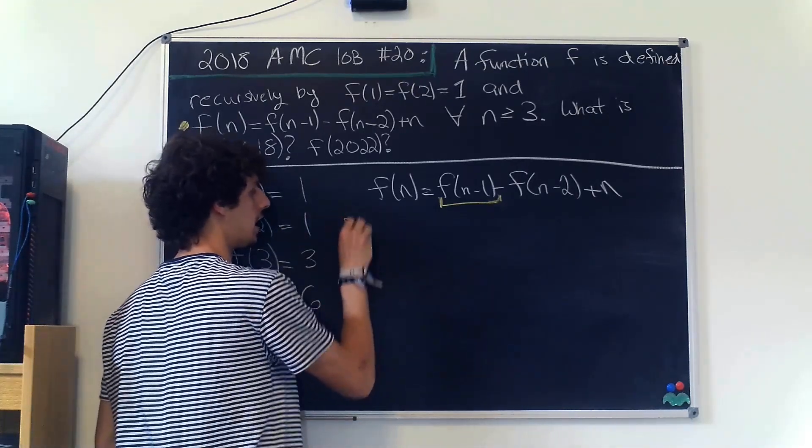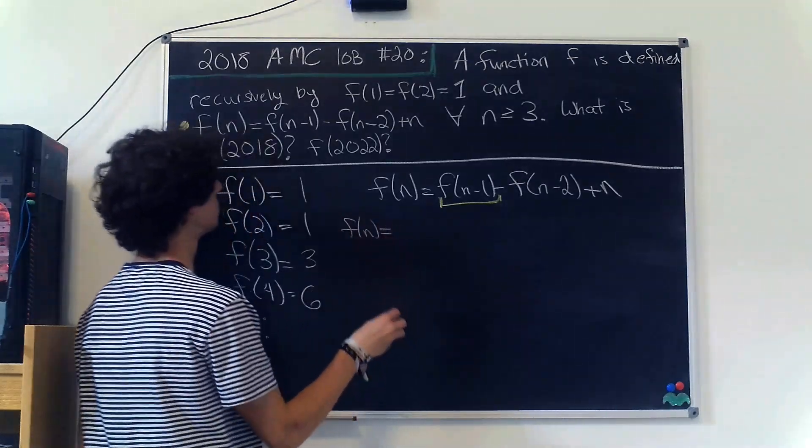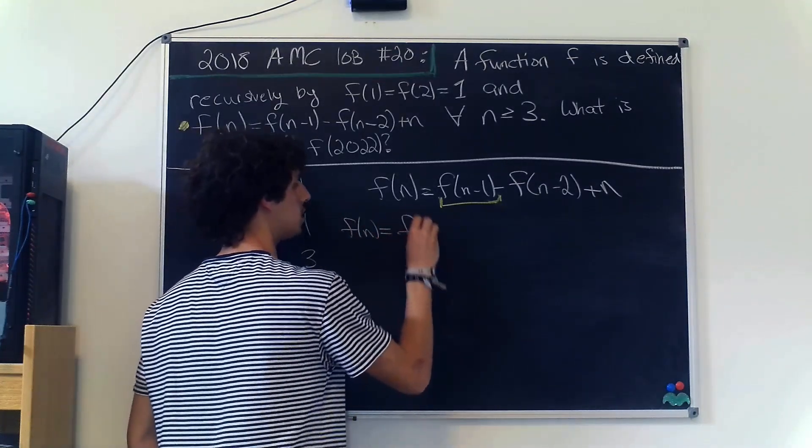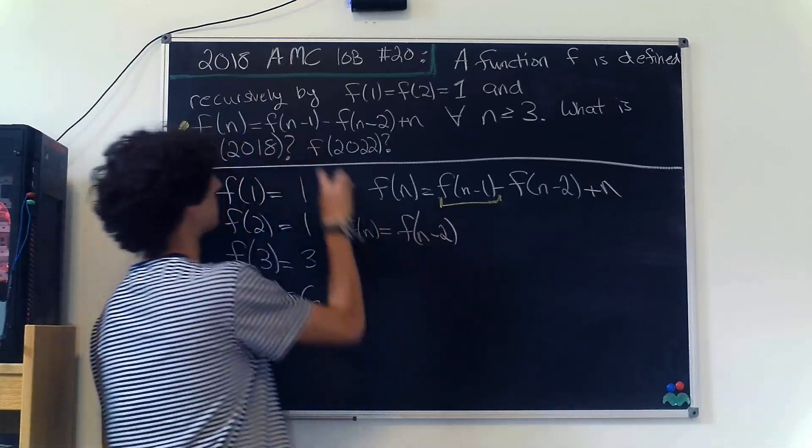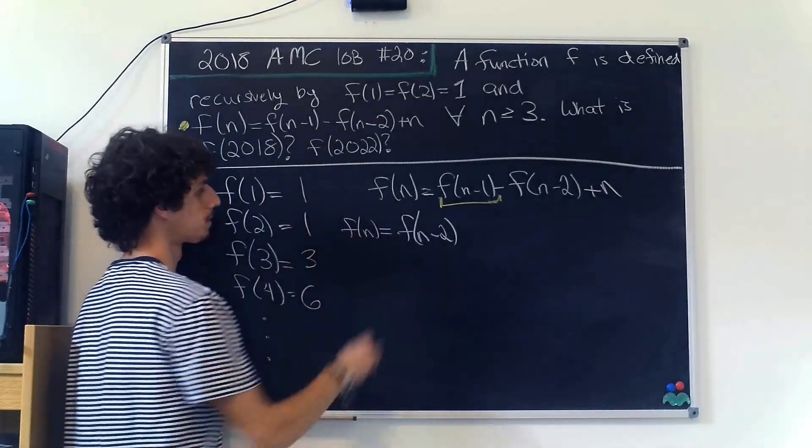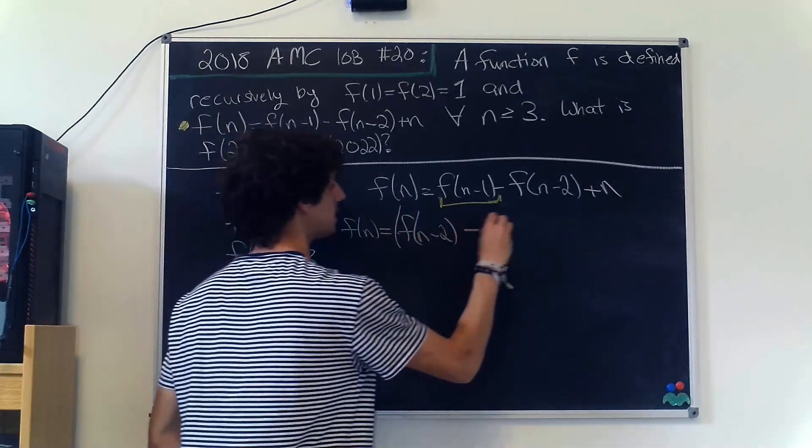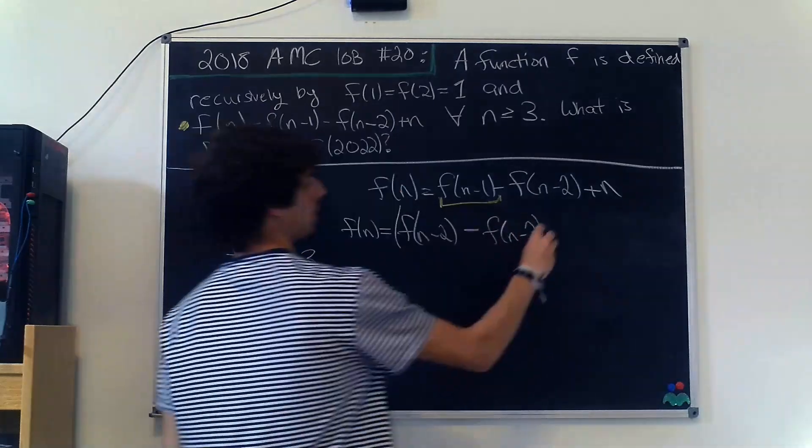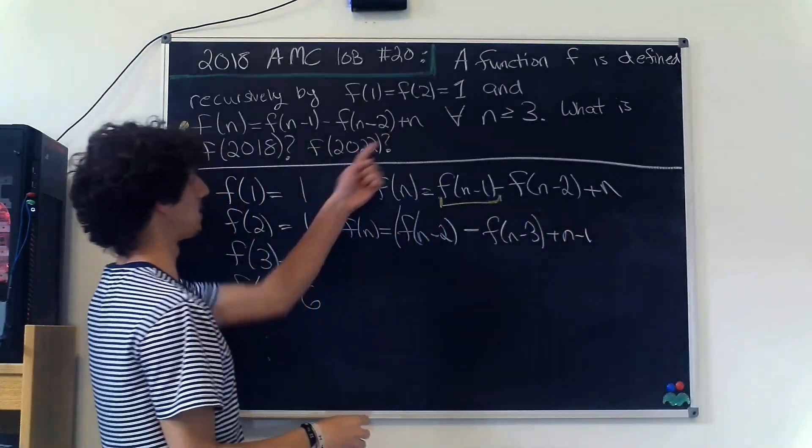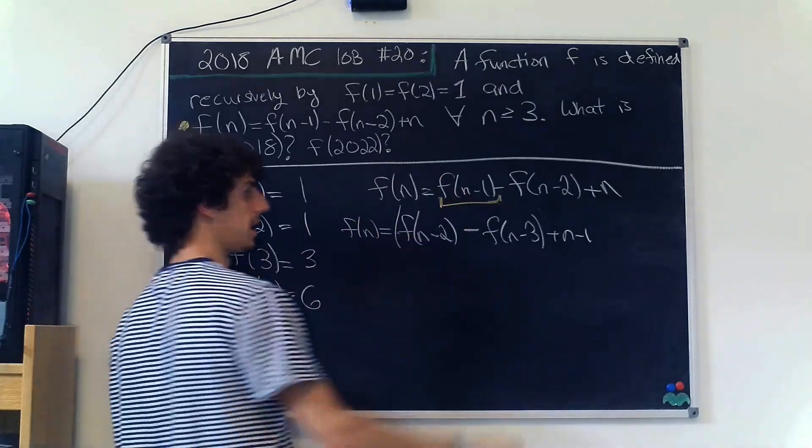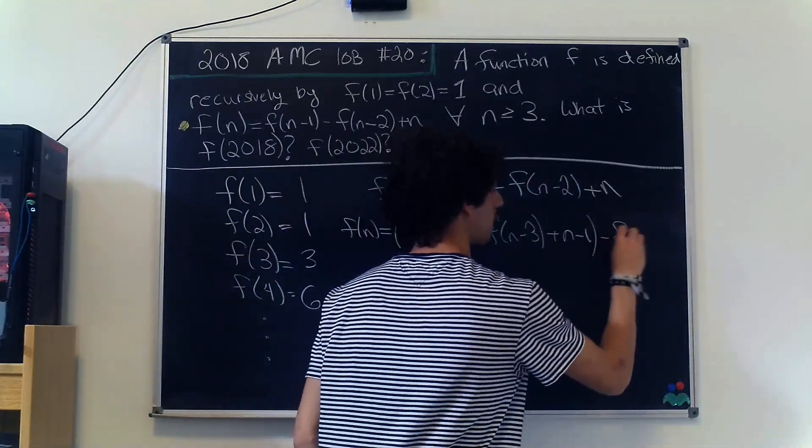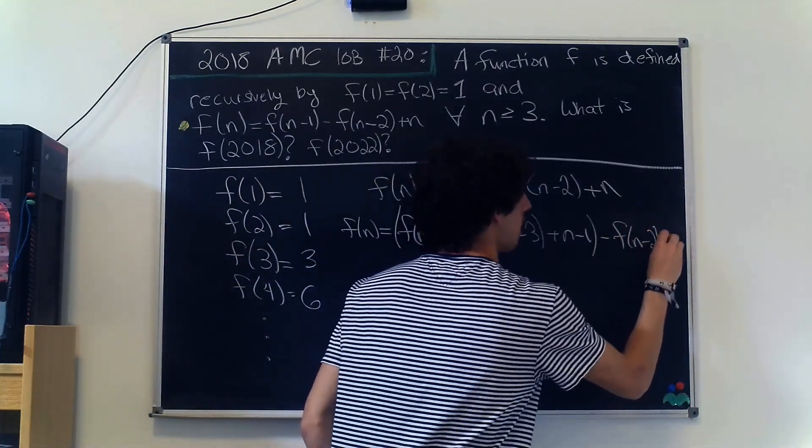We have f(n) equals f(n-2) - that's by this part right here - minus f(n-3) plus n-1. That's by this n right here, but now we're working with n-1. And then we subtract f(n-2) and add n, and that's from these two terms right here.